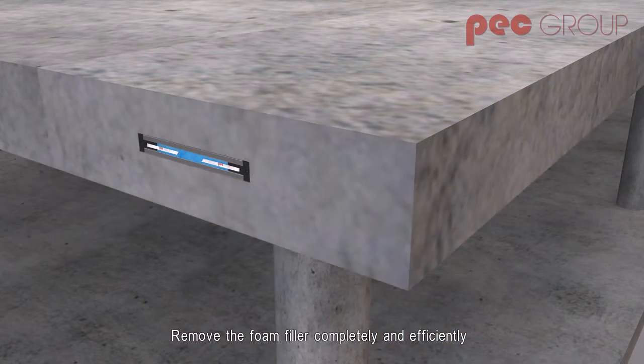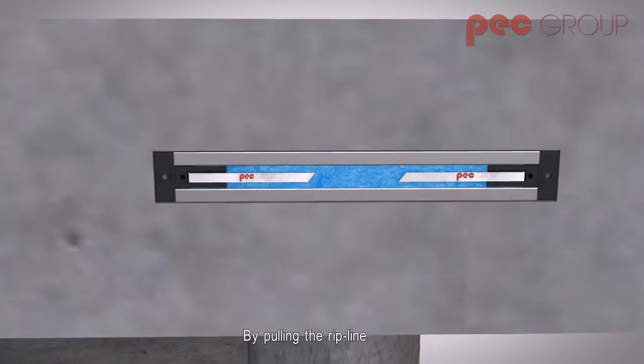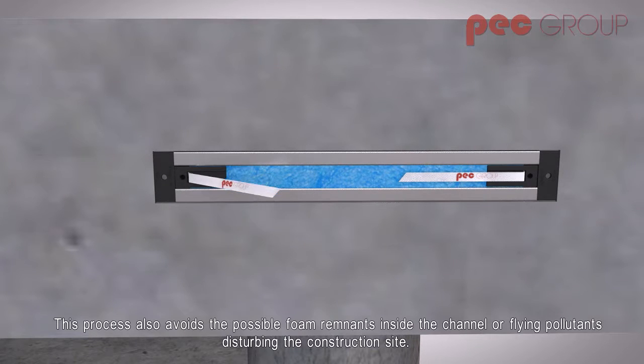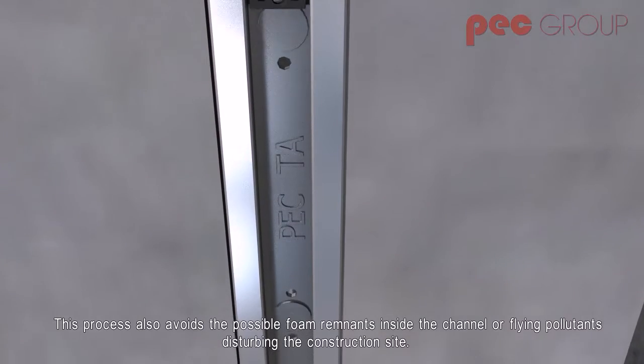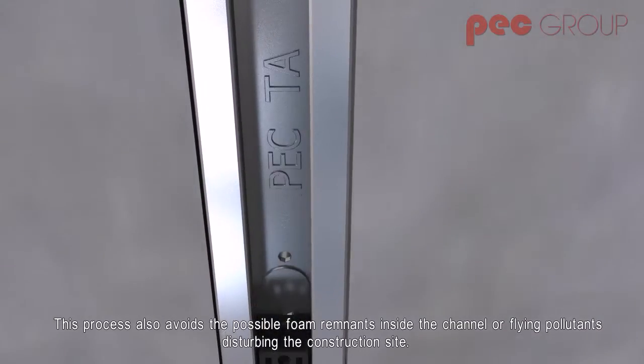Remove the foam filler completely and efficiently by pulling the rip line. This process also avoids the possible foam remnants inside the channel or flying pollutants disturbing the construction site.